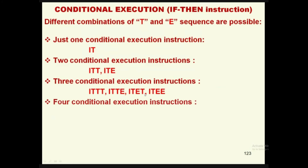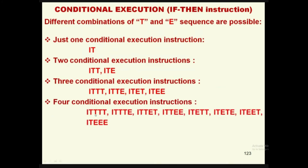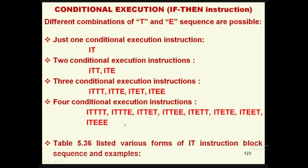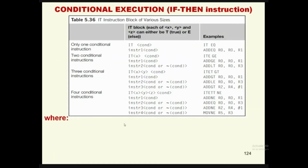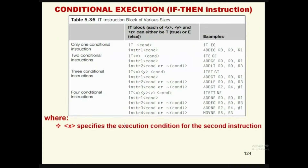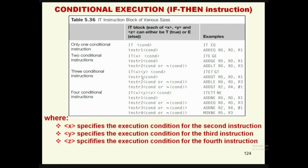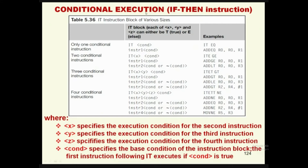Different combinations of Then (T) and Else (E) suffixes are possible in the IT instruction. For one conditional instruction: 'IT'. For two: 'ITT' or 'ITE'. For three instructions, combinations like 'ITTE', 'ITET', 'ITEE' are possible. For four conditional instructions there are eight possible combinations — for example, 'ITTT', 'ITTE', 'ITET', 'ITEE', 'IETT', 'IETE', 'IEET', 'IEEET'. Table 5.36 lists the various forms of IT instruction block sequences. The condition suffix specifies the base condition, and T/E indicate whether each subsequent instruction executes when the condition is true or false.